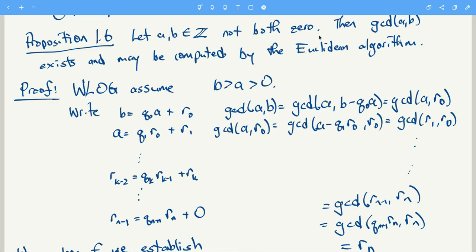We can assume that a and b are both positive because changing the signs doesn't change what the common divisors are. So with b greater than a, we divide a into b using long division to get remainder r0, then divide r0 into a to get r1, then r1 into r0 to get r2, and so on. The sequence of remainders is strictly decreasing, so eventually we reach a remainder of zero, giving us rn times q_{n+1} equals r_{n-1}.